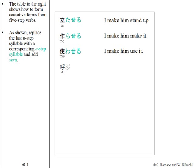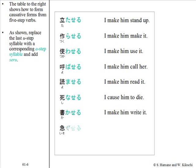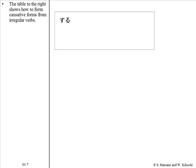Further five-step verb examples: 呼ぶ becomes 呼ばせる, 読む becomes 読ませる, 死ぬ becomes 死なせる, 書く becomes 書かせる, 急ぐ becomes 急がせる, 話す becomes 話させる.